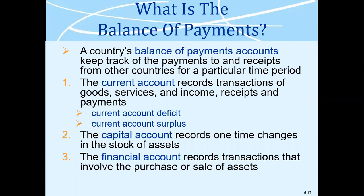Your balance of payment shows how much you import and how much you export. Then you have your current account — in terms of currency, money, income and receipts. If you have more money in your current account, it has a positive surplus, meaning you're doing well and exporting more. But if it is in deficit, you're not doing well — you owe a lot to other people around the world. Then there is the capital account, which records one-time changes in the stock of assets, telling you how much addition has happened to your country's overall assets. Finally, the financial account records financial transactions of purchases and sales.